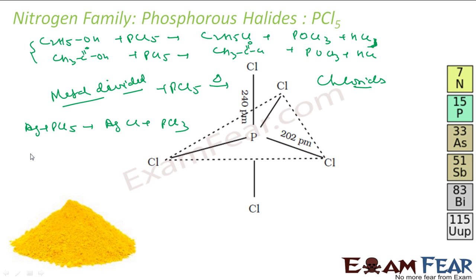This PCl5 is also used in the synthesis of organic compounds, for example C2H5Cl and CH3COCl. So it is used actually in these reactions to prepare organic compounds. The shape, if you see, is trigonal bipyramidal. It is trigonal bipyramidal - that is the structure of phosphorus here.